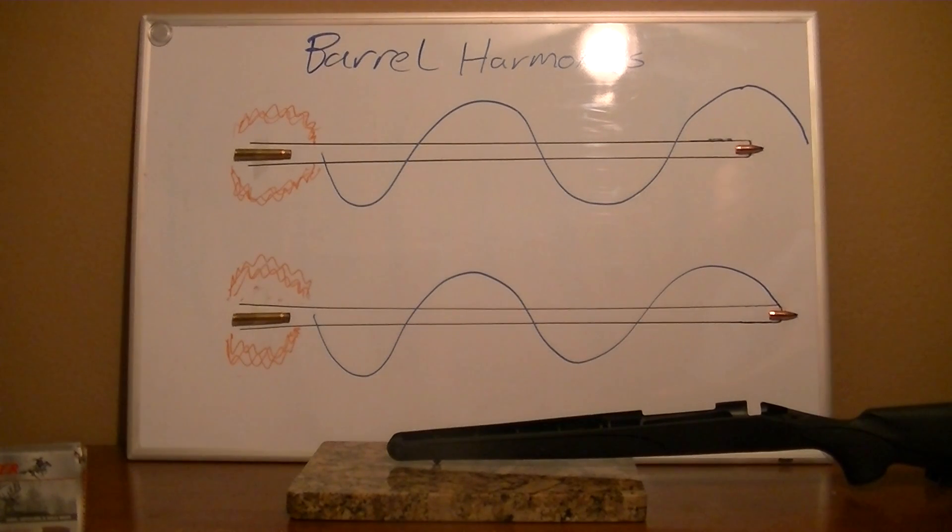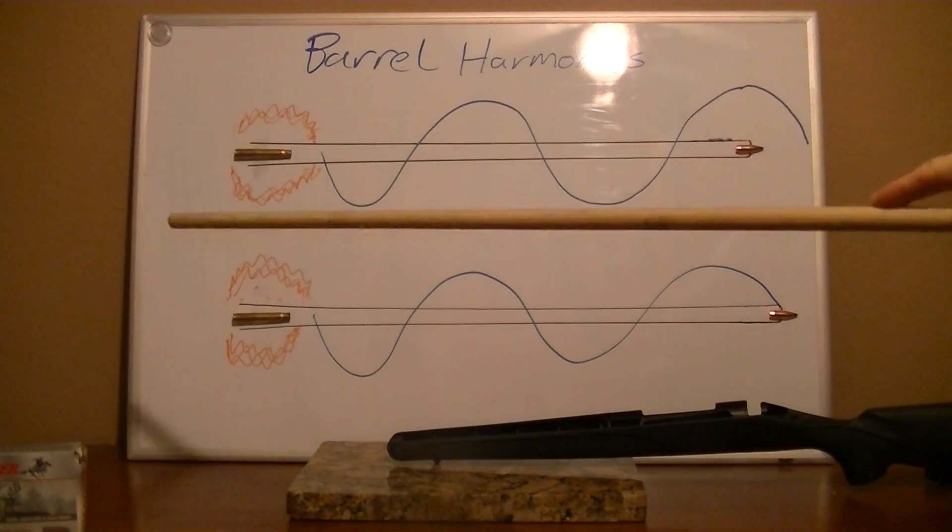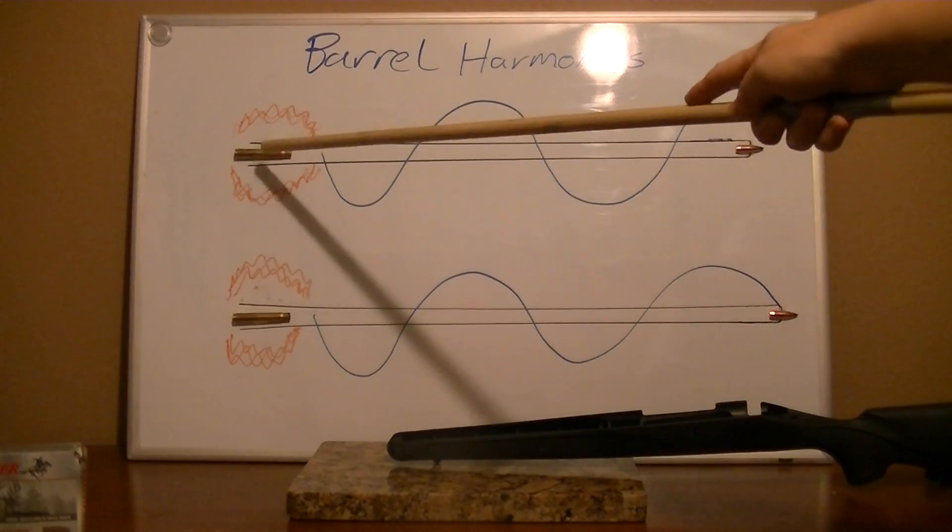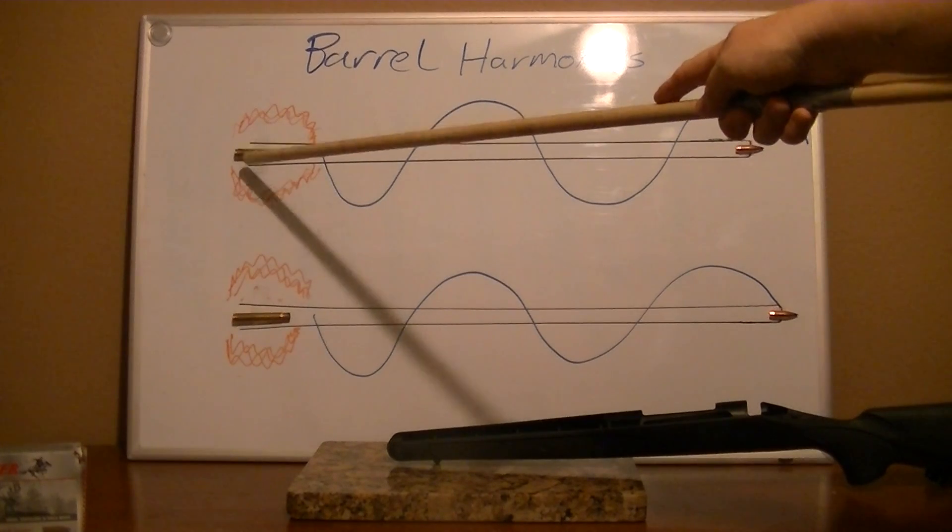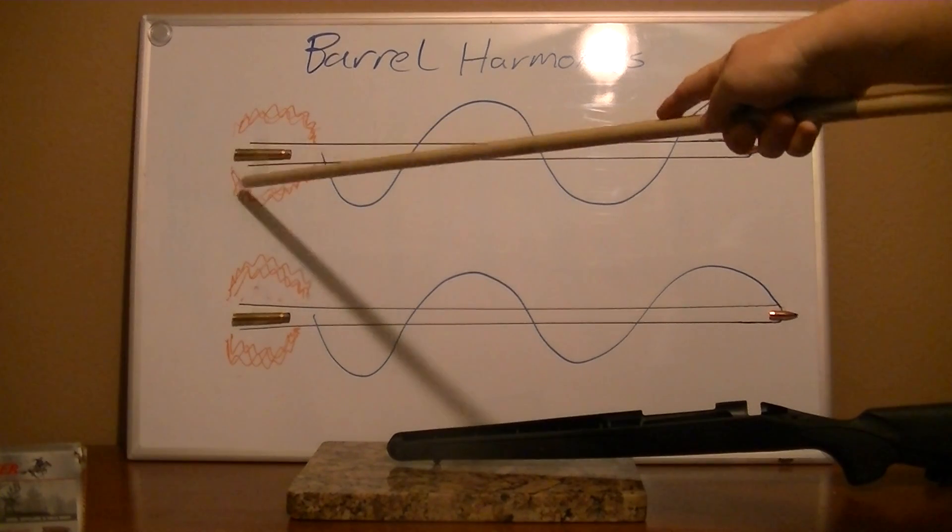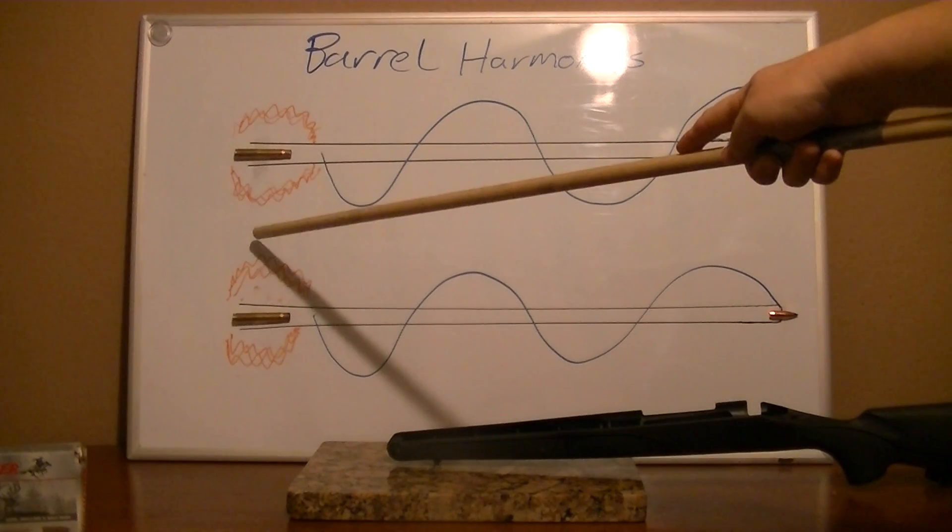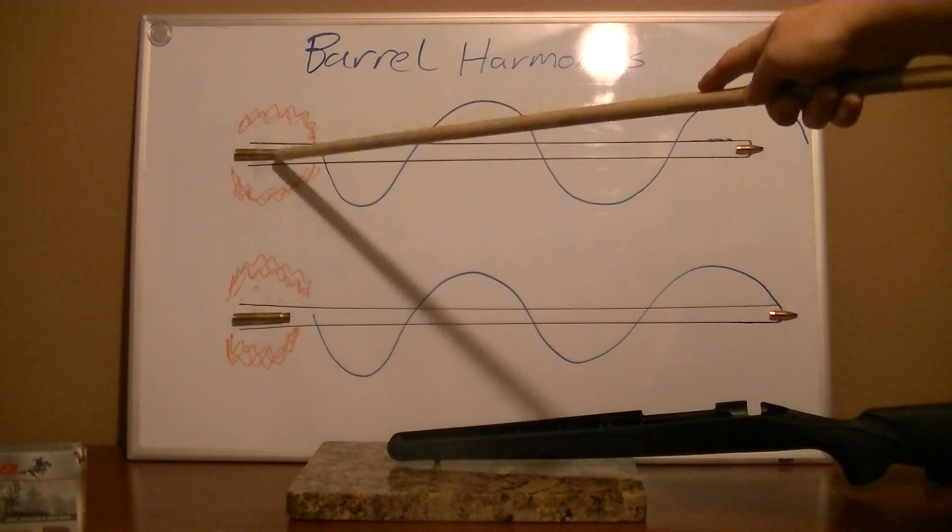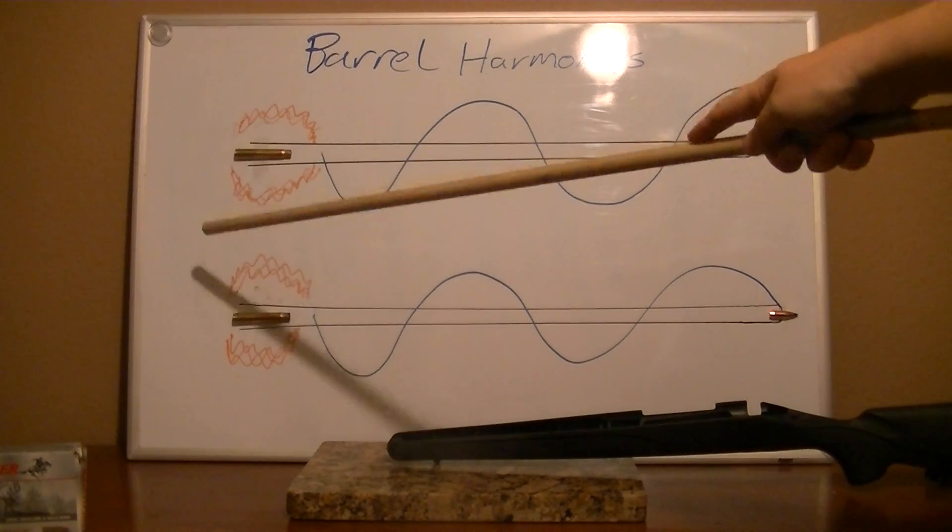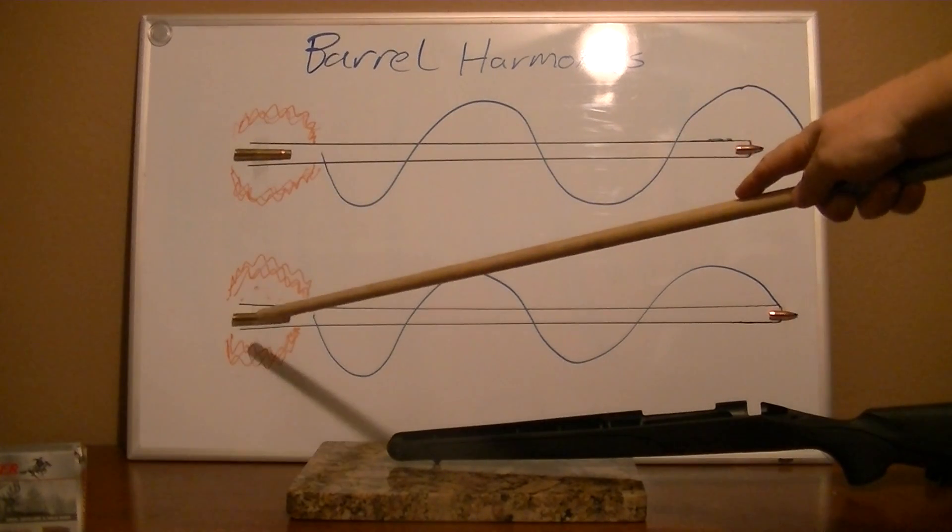The third way to do it is the reloader's method. So I reload my bullets. What I'll do is I'll take a cartridge, I'll pick a bullet, a cartridge, and a powder I want to use that I heard is good. And I'll load the powder charge as low as I can out of my book. So on the low end of the range, and then I'll do four like that, and then the next four will be a half grain higher, and the next four will be a half grain higher. So I'm going up in powder charge by little increments.